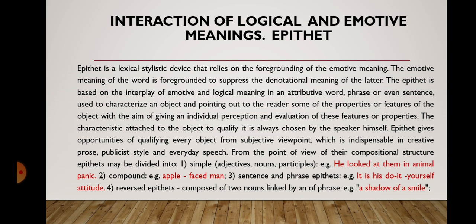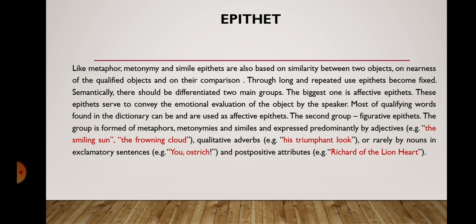From the point of view of their compositional structure, epithets may be divided into: Simple — adjectives, nouns, participles — for instance, 'he looked at them in an animal panic'; Compound — for instance, 'apple-faced man'; Sentence and phrase epithets — for example, 'it is his do-it-yourself attitude'; and Reversed epithets — composed of two nouns linked by an of-phrase — for example, 'a shadow of a smile.' Like metaphor, metonymy, and simile, epithets are also based on similarity between two objects, nearness of the qualified objects, and their comparison.